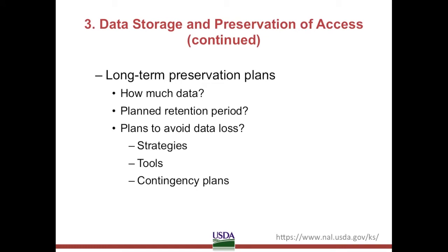What is the technical infrastructure and staff expertise? How and why are they qualified to preserve the data? Funders want to know that competent people with adequate arrangement are in charge of maintaining the data. This is especially important information to include if researchers are publishing data using their own infrastructure. Also in the Data Storage and Preservation of Access section, specify plans for long-term preservation. Some items to address include approximately how much data are expected to be archived — ideally this includes raw data and or minimally processed data. What is the planned retention period for the data? Outline strategies, tools, and contingency plans that will be used to avoid data loss, degradation, or damage.